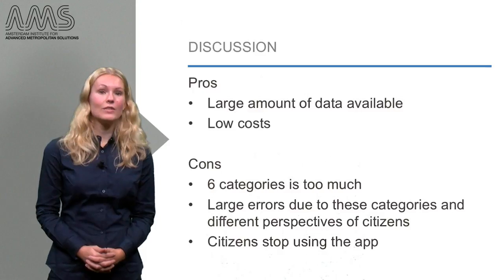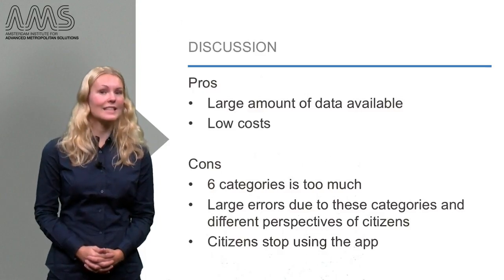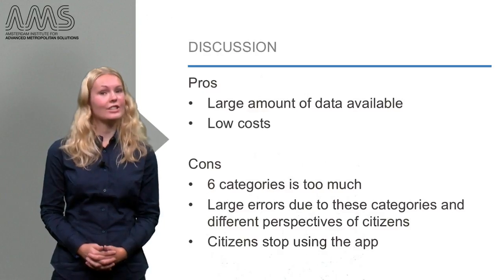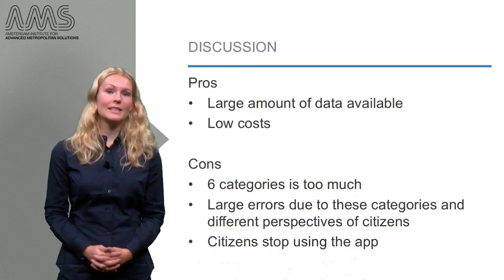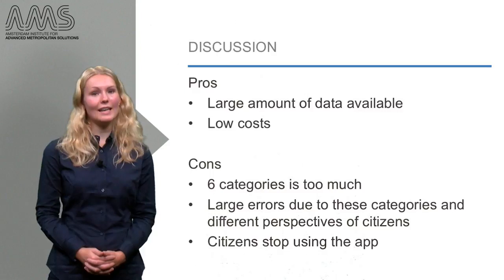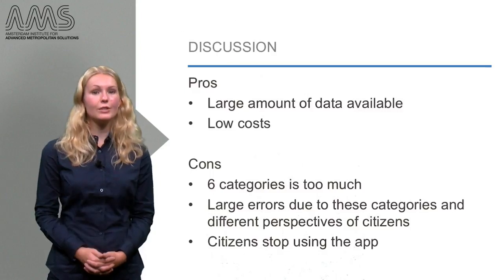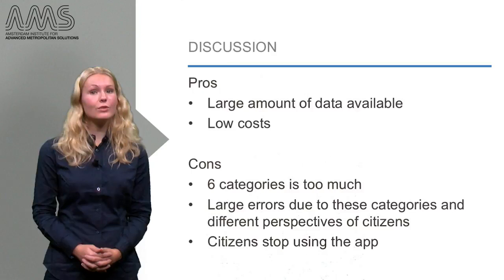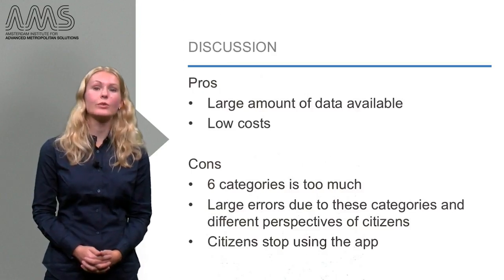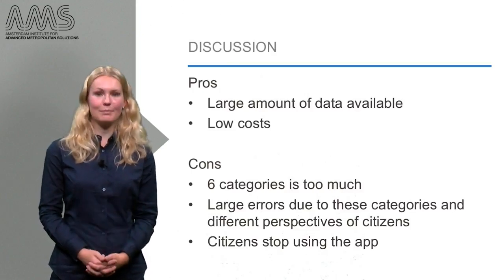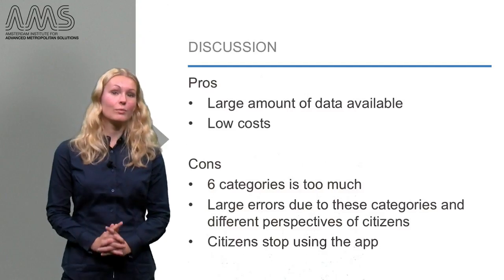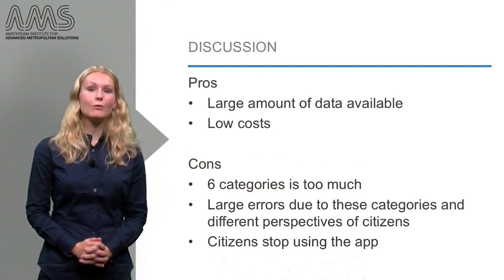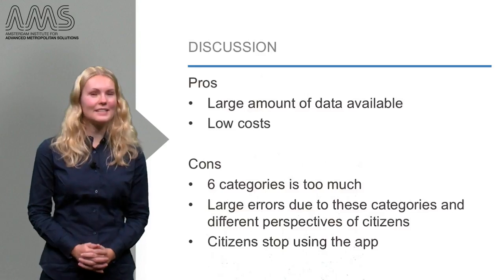Since the rainfall measuring is simplified to only six categories, precision is reduced considerably. Early experiments also made clear that there were still too many categories for users to differentiate between. It also proved difficult for citizens to stay committed and continue to actively use the app. With the lessons learned from this experiment, a new app is being developed with the city of Waterdam as the testing ground.